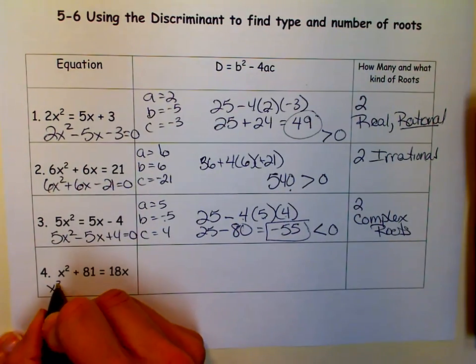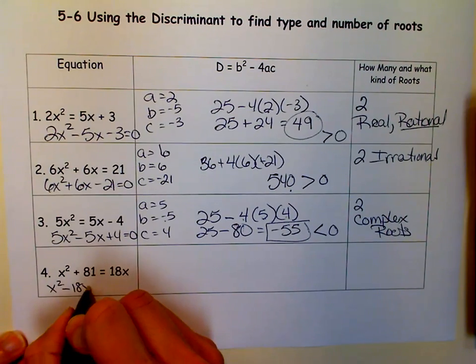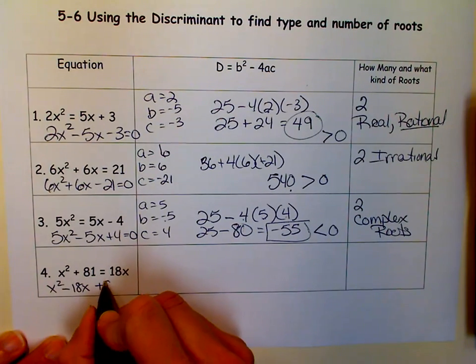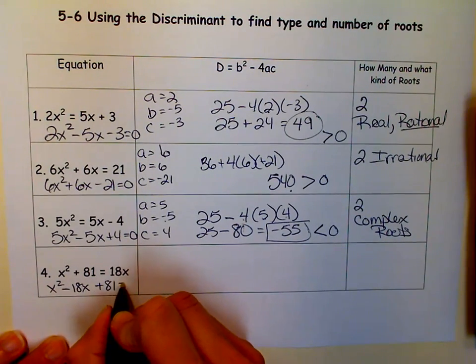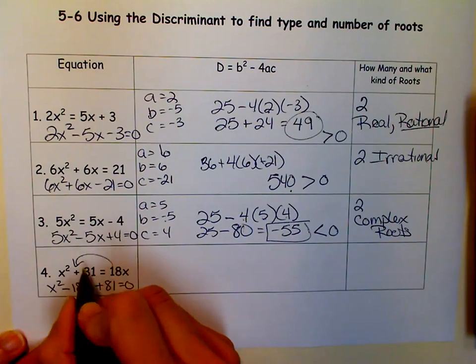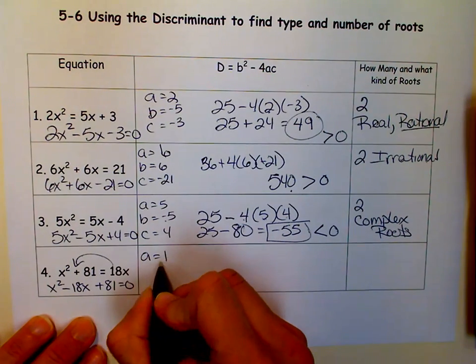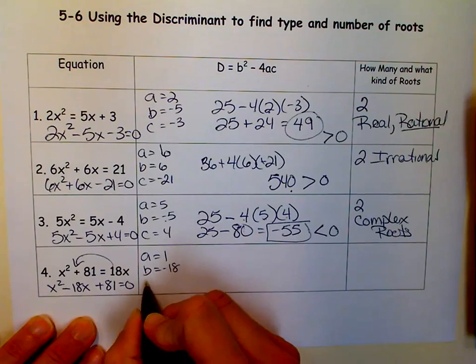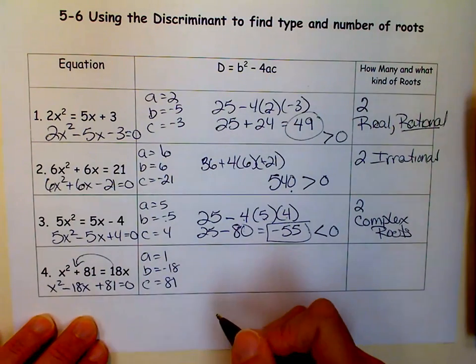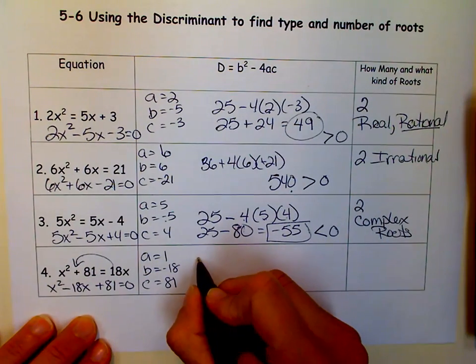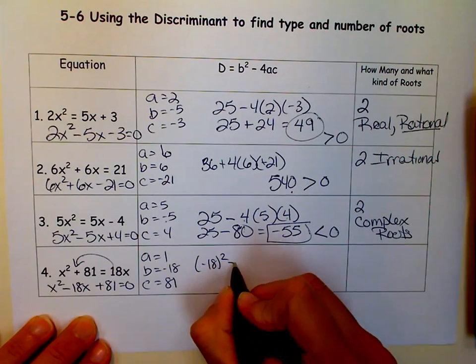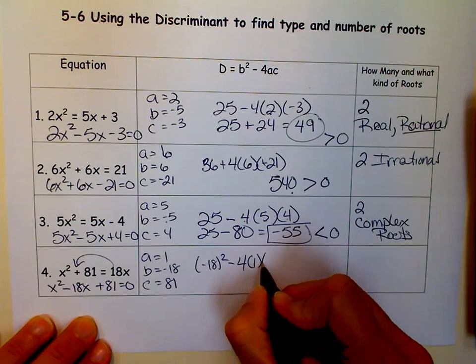So last one. I'm going to move the x over. And notice that I had to kind of move it in between these two to make sure I don't think that this is b. Remember, b is in front of the x. It's the coefficient of the x term. It's not the constant term. So a equals 1, b equals negative 18, and c equals 81. And so b squared minus 4 times a times c.